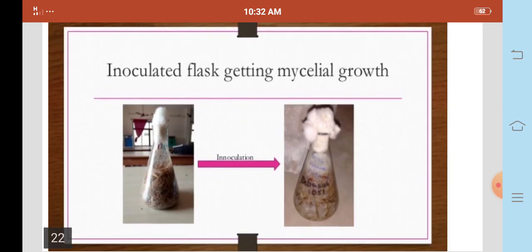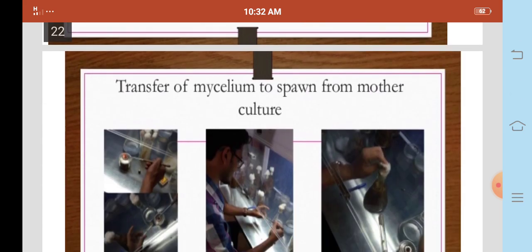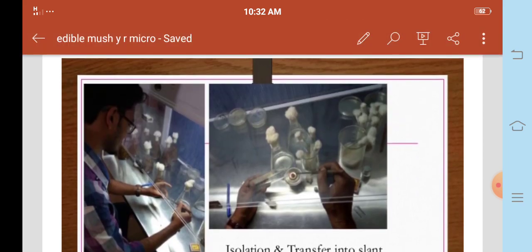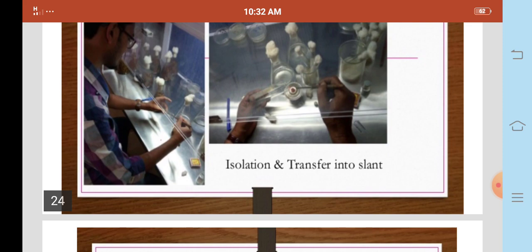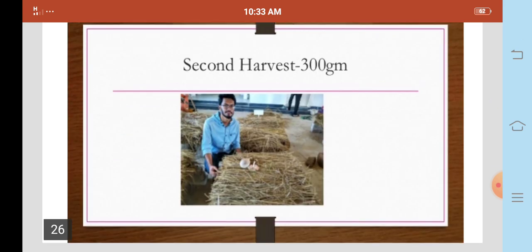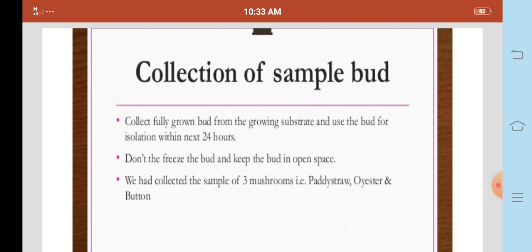Inoculation process getting mycelial growth. The transfer of mycelium to spawn from mother culture. We transfer mycelium to spawn from mother culture. The first harvest is 407 grams. The second harvest is 300 grams.